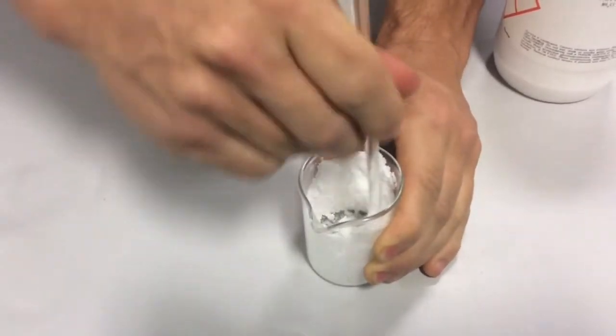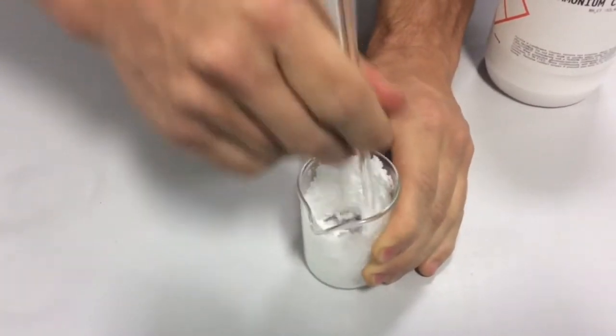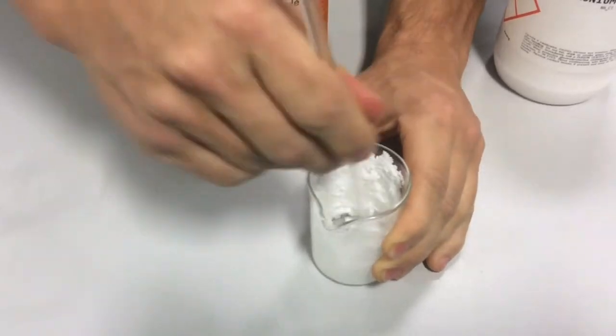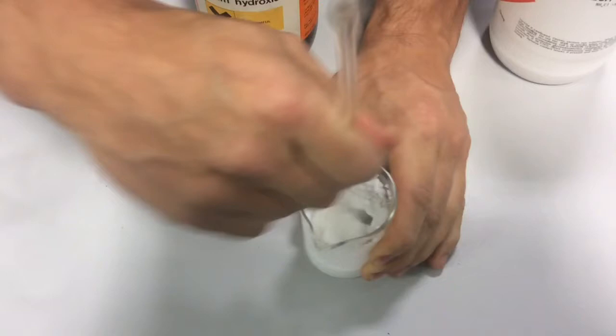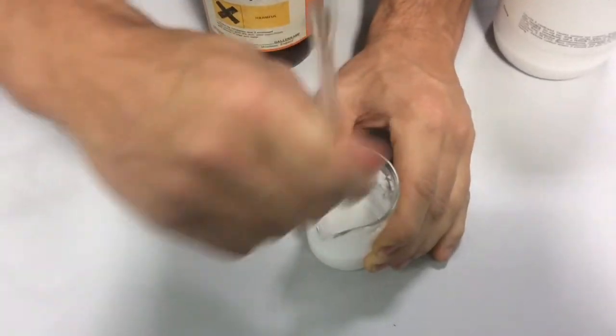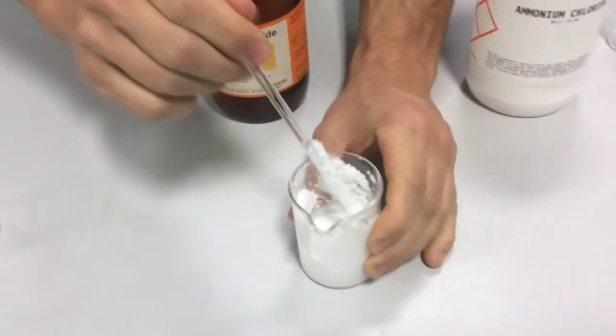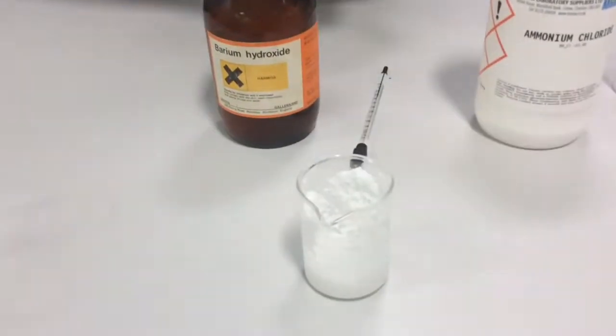Now I keep stirring, it's starting to turn into a paste. Keep going, keep going, it should eventually turn into like a liquid. Look, if I keep going faster and faster. Now what do you think? If that's an exothermic reaction that we looked at before, there we go, it's turned into a paste. If that was an exothermic reaction before, what do you think this type of reaction is?